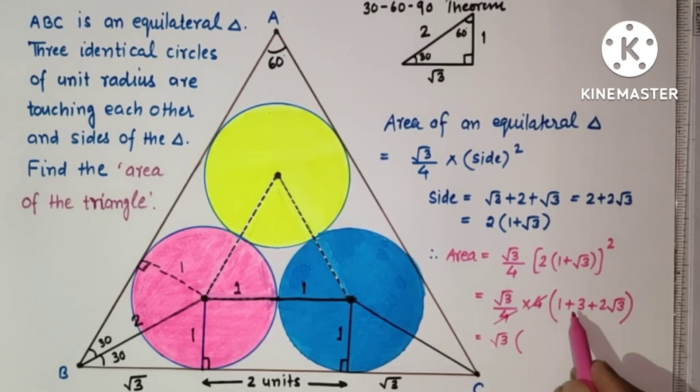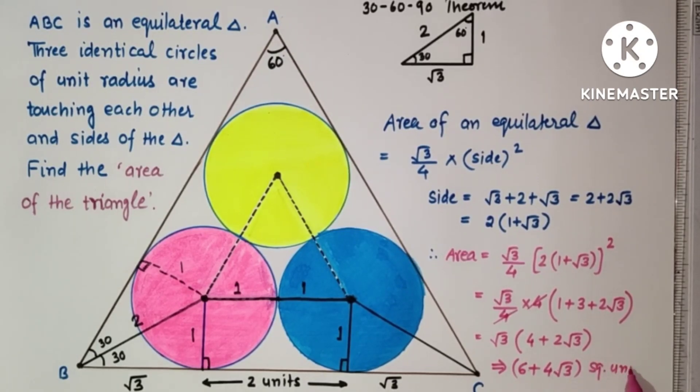So root 3, 3 plus 1 is 4 plus 2 root 3, and that is equal to, if you multiply root 3 into 4 is 4 root 3, root 3 into root 3 is 3 into 2, 6 which is 6 plus 4 root 3 square units, and this is the required answer.